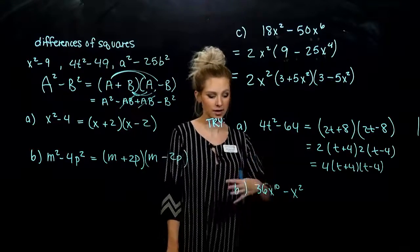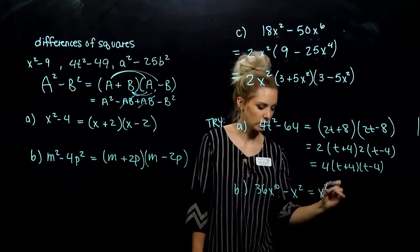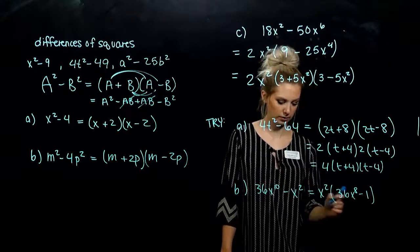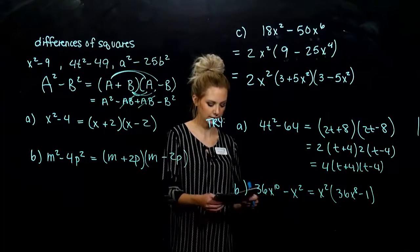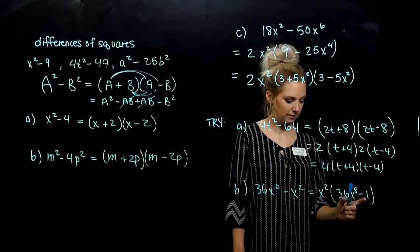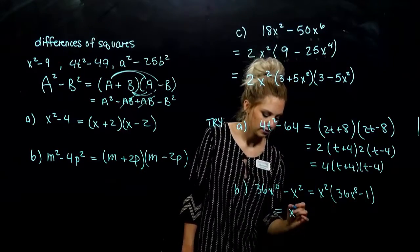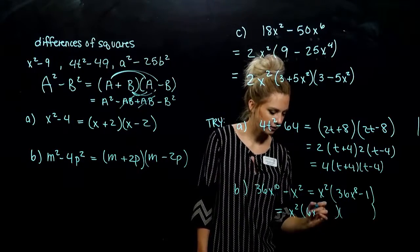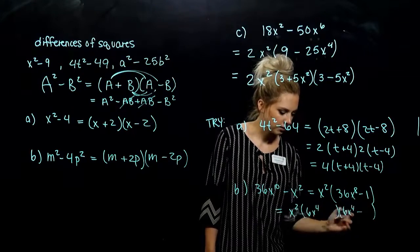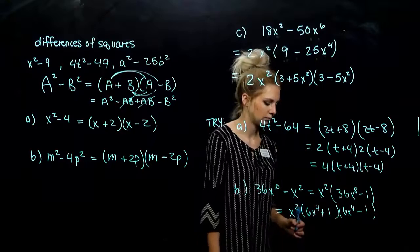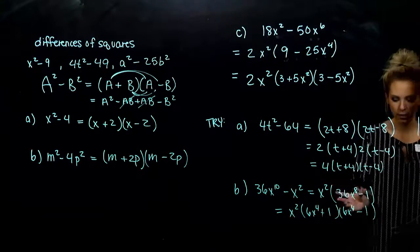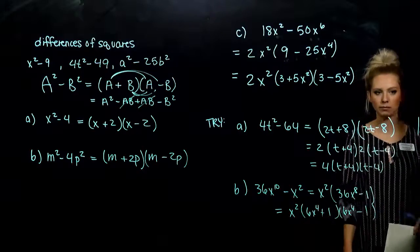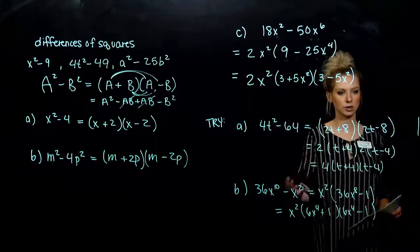Looking at the second one — is there anything in common we can take out of both to help? x squared. When we do that, we're left with 36x to the 8th minus 1. We need that placeholder. Are they perfect squares? Yes. And we have a difference, so we can factor it farther. So we've got x squared times two binomials: the square root of the first is 6x to the 4th, plus and minus, and the square root of 1 is just 1. Keep asking: can we go any farther with this difference? x to the 4th is a perfect square, but 6 is not. So we're done. If you're not sure, FOIL it out.